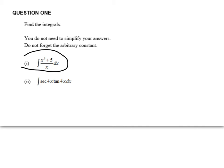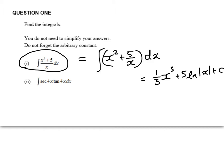So the first one, we're going to simplify that. And we'll get x squared plus 5 on x dx, so that equals 1 third of x cubed plus 5 ln of x plus c. You even get told not to forget the plus c.